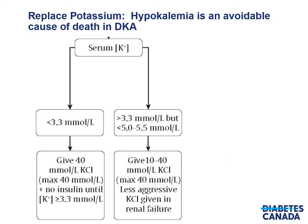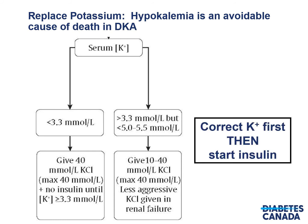The second pillar is replacing potassium. Don't forget — hypokalemia is an avoidable cause of death in DKA. If the serum potassium is less than 3.3 millimoles per liter, give 40 millimoles per liter of KCl — the maximum concentration allowed peripherally — and hold insulin until the potassium is greater than 3.3. Ideally give about 40 millimoles per hour; if this concentration is not permitted peripherally, give it through a central line. If potassium is greater than 3.3 but less than 5 to 5.5 millimoles per liter, give 40 to 50 millimoles per liter of KCl, less aggressively if the patient is in renal failure. Correct the potassium first, then start insulin.